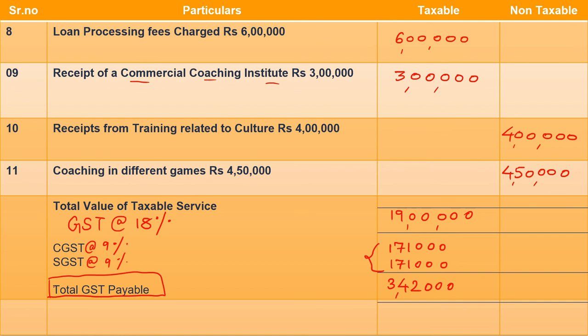This is an extra calculation sometimes asked in questions — GST payable. Whenever it is asked, just check the rate accordingly and divide it in half: CGST will be 9% and SGST will be 9% if 18% is given; if 5% is given, it will be 2.5% and 2.5%. So that was the combined question — I hope your previous 3 points that you studied have been revised.